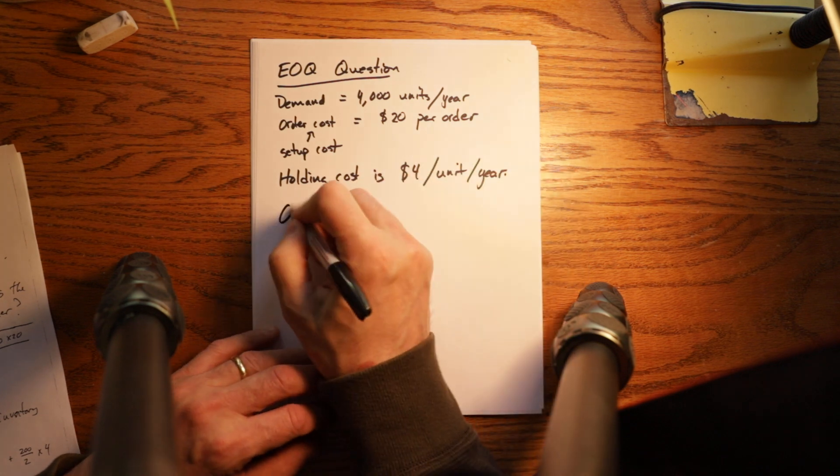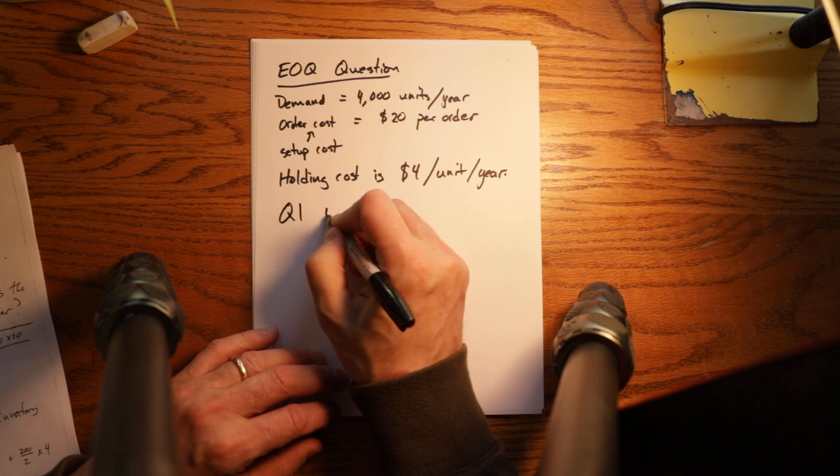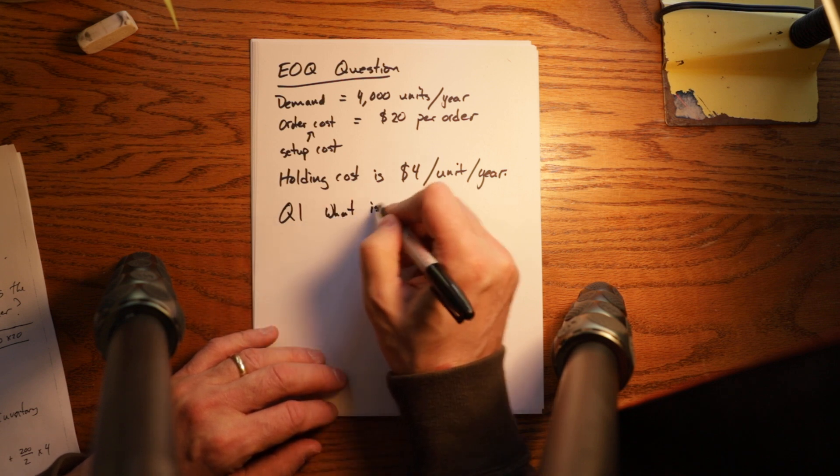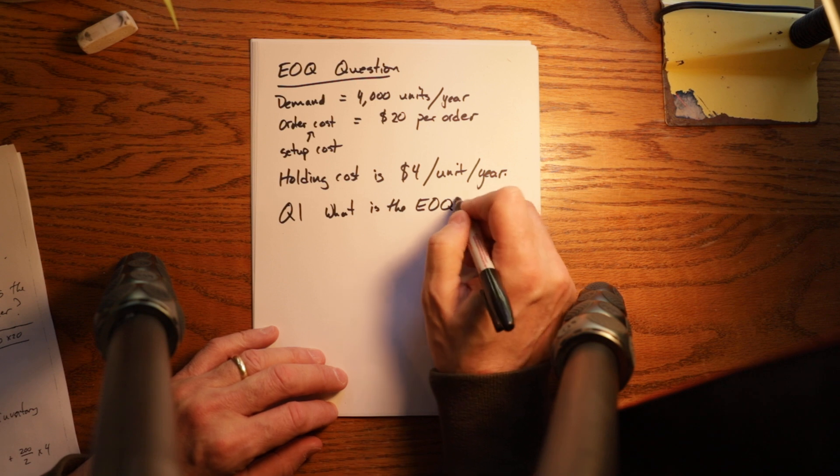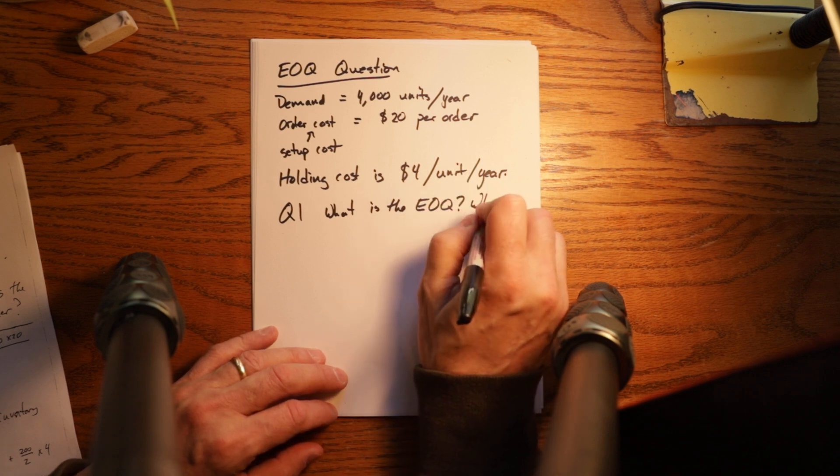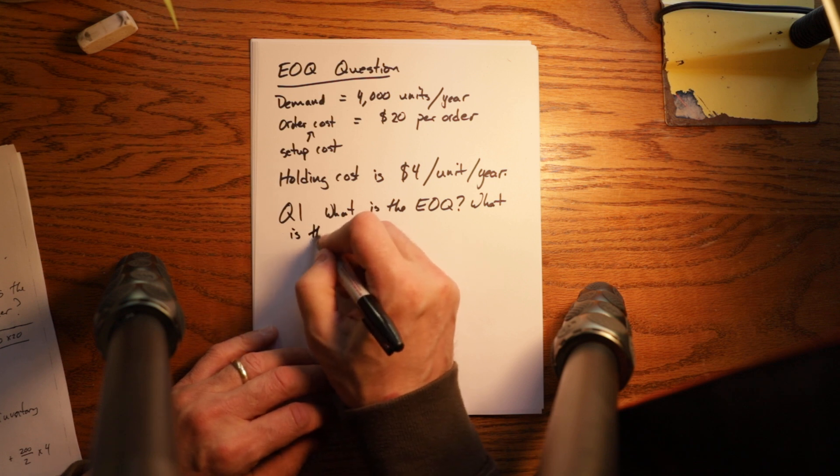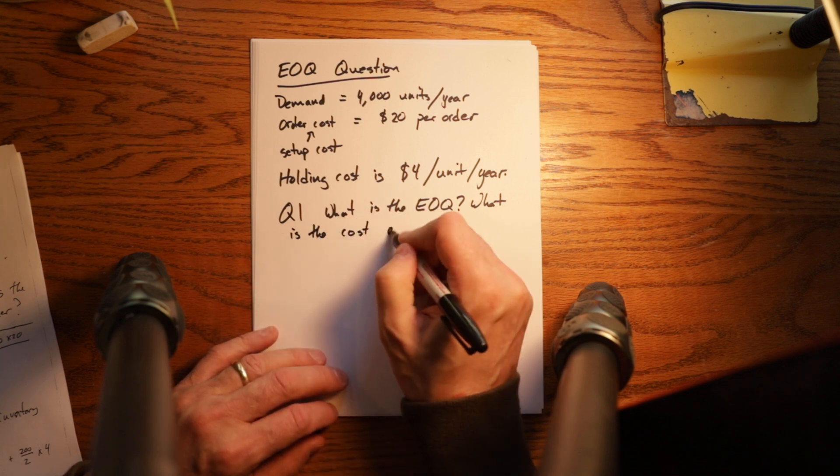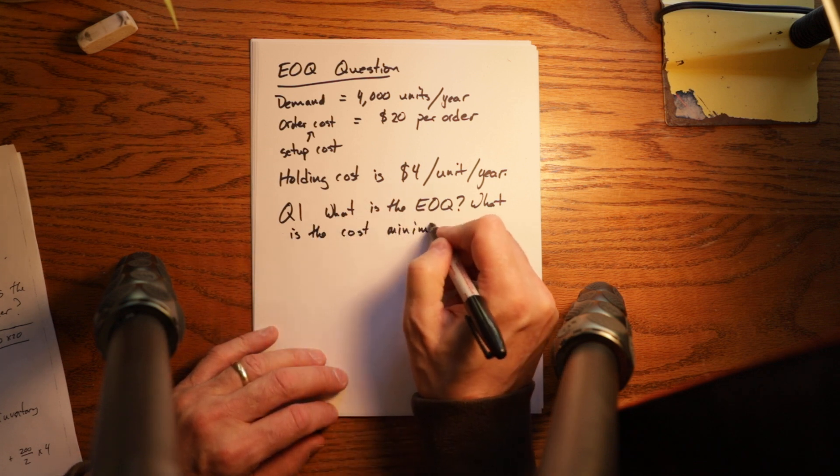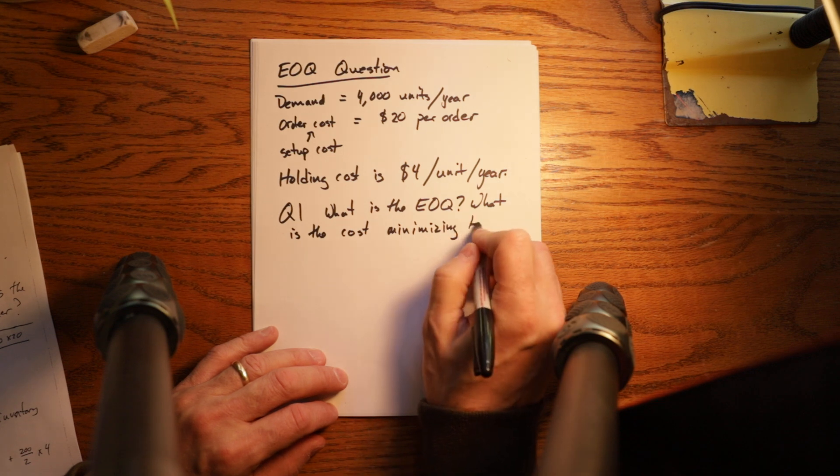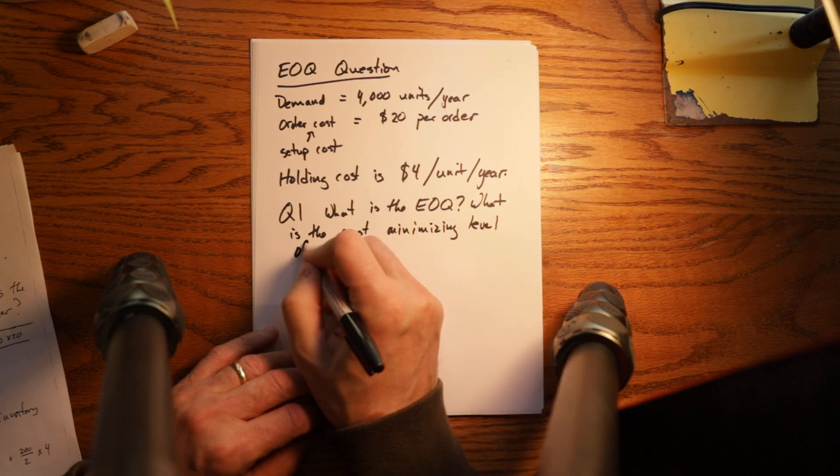So the first question is what is the EOQ, or stated a different way, what is the cost minimizing level of order?